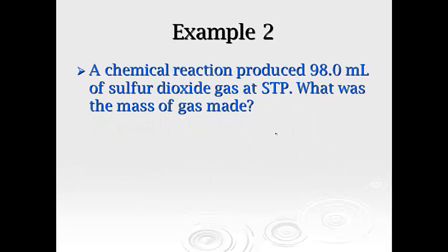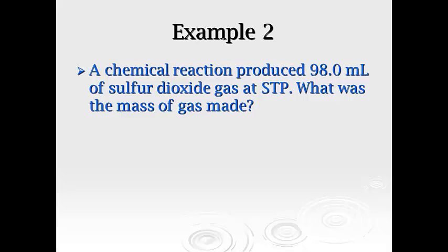All right, now, chemical reaction this time produced 98.0 milliliters of sulfur dioxide at STP. What was the mass of gas made? So we're going to have to do a couple of steps here. First, we're given 98.0 milliliters. We want to know grams. Now, I don't have a way to go directly from milliliters to grams, but what I can do is go milliliters to liters, liters to moles, and moles to grams. You're really going to start to see us have to put together a lot of these conversion factors that we've been covering throughout the year as a multi-step process at this point.